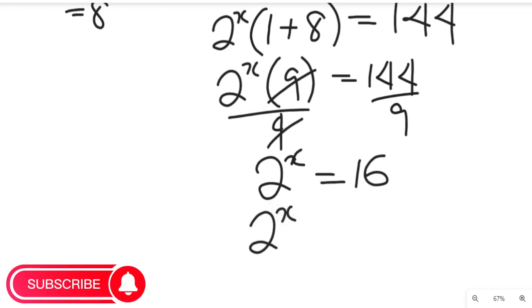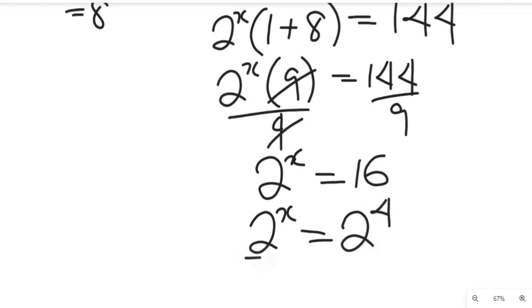2 to the power of x will be equal to 2 raised to the power of 4, and that will give us 16. So we've made both of them have common base. With this common base, the powers will equate. Therefore, x will be equal to 4.